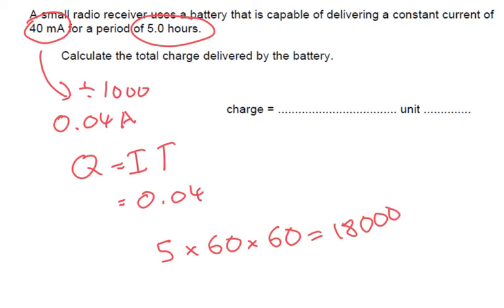So we're going to times this by 18,000. So 0.04 times by 18,000 we get 720, and then the unit is coulombs.